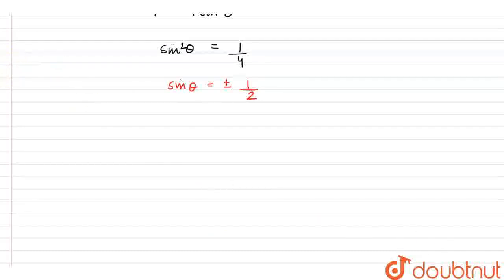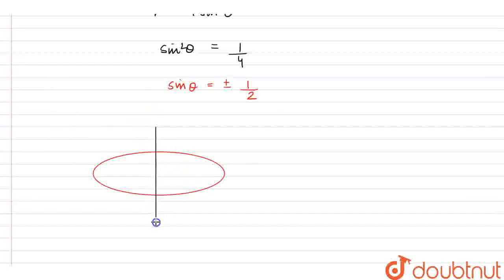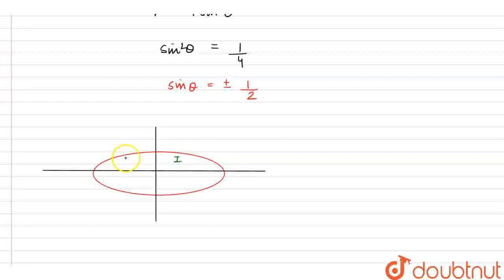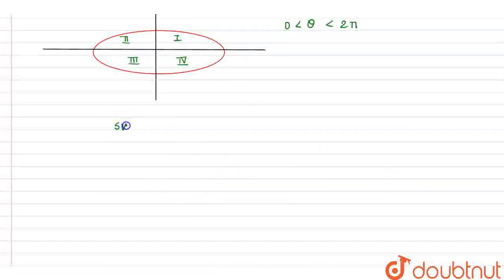Now, from here, we can say that if this is our ellipse and these are the coordinate axes, y axis and x axis, theta will lie in first quadrant, second quadrant, third quadrant or fourth quadrant, which means the value of theta will vary between 0 and 2π. So, if we take sin theta equals 1 by 2 and sin theta equals minus 1 by 2, we can find theta values.